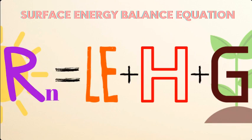Surface energy balance is specifically used to describe the balance between all surface energy inputs and the outputs. On the left-hand side of the equation, Rn is the net radiation equal to the fluxes: LE, the latent heat flux, plus H, the sensible heat flux, plus G, the soil heat flux.